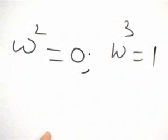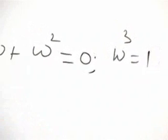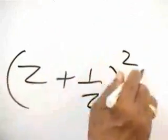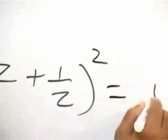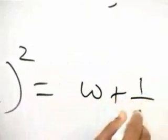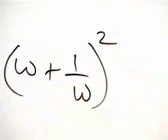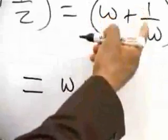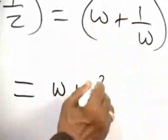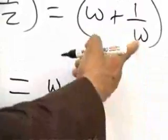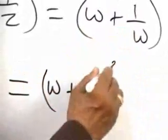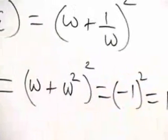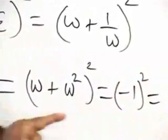Now, keeping this in mind, we will evaluate bracket by bracket. That is, (Z + 1/Z) whole squared. This will be equal to (omega + 1/omega) whole squared. Multiplying by omega squared on both sides, the denominator becomes omega cubed which equals 1. So this becomes (minus 1) whole squared, which is equal to 1. The first bracket is equal to 1.